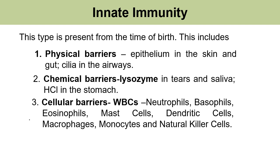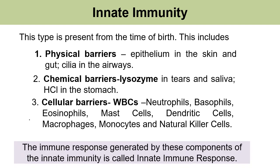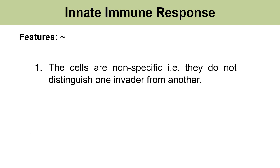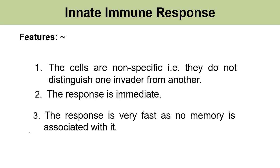Cellular barriers include white blood corpuscles, basically the neutrophils, basophils, eosinophils, mast cells, dendritic cells, macrophages, monocytes, and natural killer cells. The immune response generated by these components of innate immunity is called the innate immune response. The cells of the innate immune response are non-specific; they do not distinguish one invader from another. The cells respond immediately to invasion and the response is very fast, basically because there is no memory associated with it.